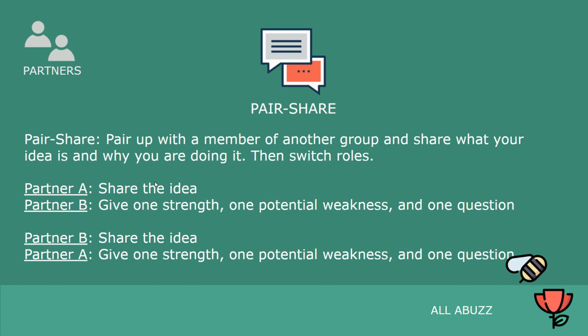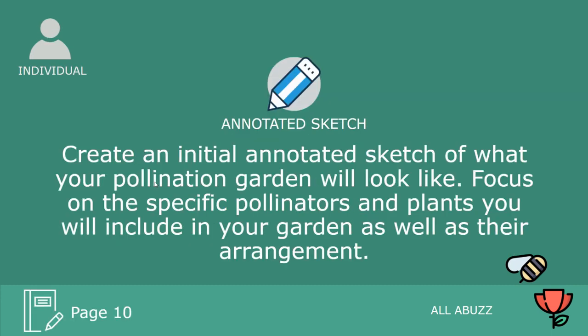You're going to pair up with a member of another group, share your ideas and why you chose them, then switch roles. Partner A shares the idea, Partner B gives one strength, one potential weakness, and one question — then switch. If there are two of you in your group, each can go find someone from a different group so you're getting input from multiple groups. Write both responses down in your packet.